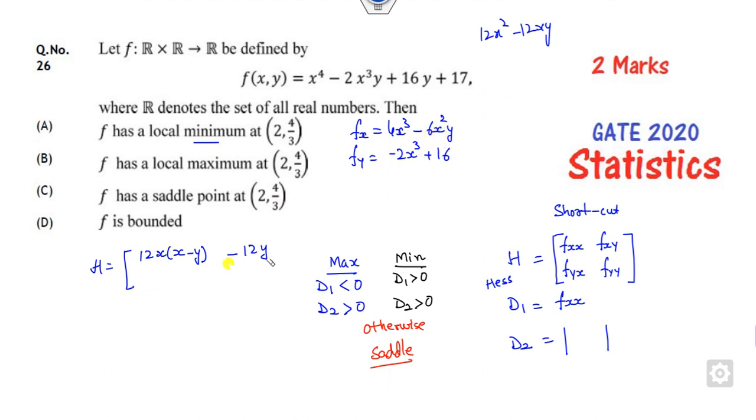Derivative with respect to y, sorry, -6x². -6x² is there. Similarly, Fyx is -6x². Fyy will be 0. Now what you can think about that? Simply, what is the first principal minor here? That is 12x(x - y). This is the first one. What is D₂?